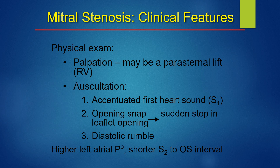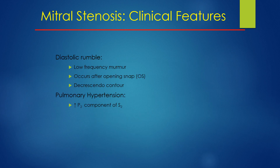Auscultation findings include an accentuated first heart sound (S1), an opening snap from the sudden stop in leaflet opening, and a diastolic rumble. Higher left atrial pressure produces a louder S1 and a shorter S2-to-opening-snap interval. Pulmonary hypertension increases the P2 component of S2.